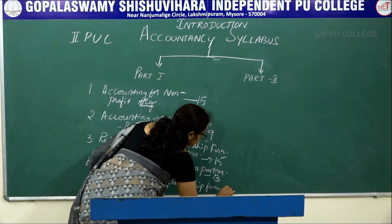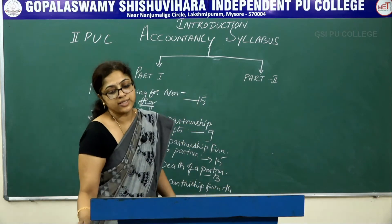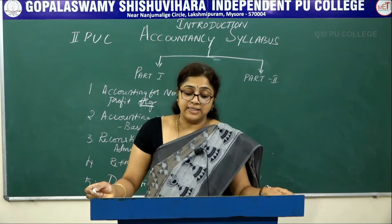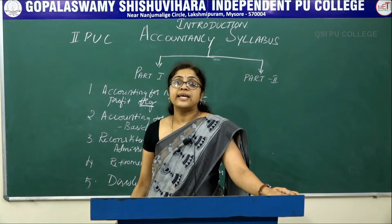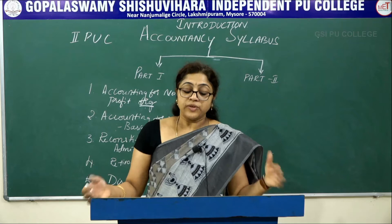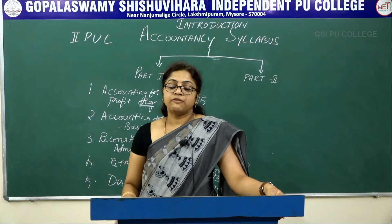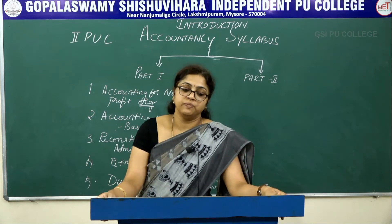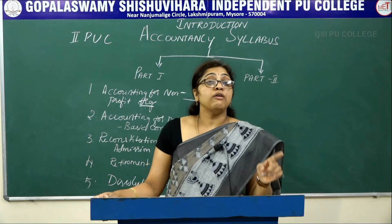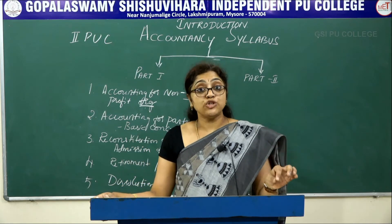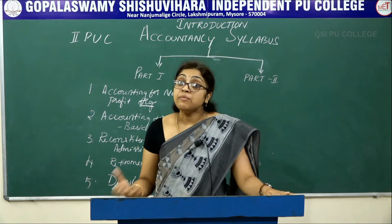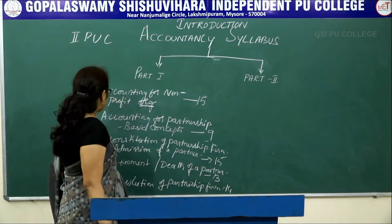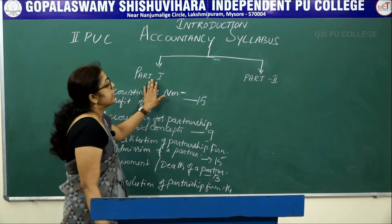The fifth chapter is Dissolution of Partnership Firm. Total marks allotted to this chapter is 40. Dissolution means all the partners cut off their connection from the firm, the firm is closed. You will learn the meaning of dissolution of a partnership firm, settlement of accounts, and accounting treatment. Total five chapters are included in Part 1.